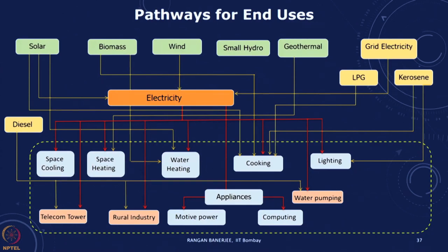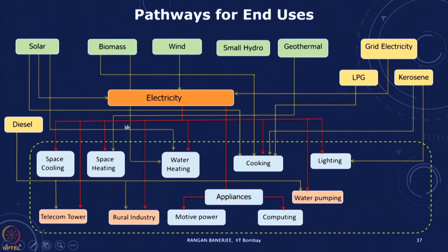When we look at different energy systems there are many different pathways for end uses. Looking at the energy flow diagram, we consider different primary energy sources — whether it is solar, biomass, wind, small hydro, geothermal, or grid electricity — and many of these can contribute to creating electricity, which then goes into different kinds of end uses like space cooling, space heating, water heating, cooking, and lighting. There are many different ways in which we can configure energy systems.